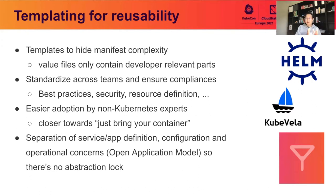With the Open Application Model you can say these templates are for workloads — for example, web service, backend worker, Knative serving workload, batch workload, or even virtual machine workload. These are templates describing how you run the workload. There's another category of templates called traits, which are operational behaviors for your workload — for example, how to do blue-green deployment, how to split traffic, or how to declare ingress rules. This is what OAM brings to you: there will never be an abstraction lock-in, as long as you have the model to declare any categories of templates and allow end users to use them.